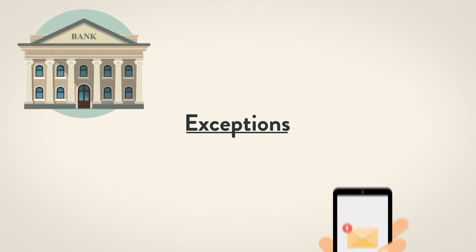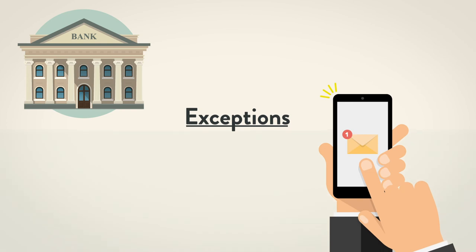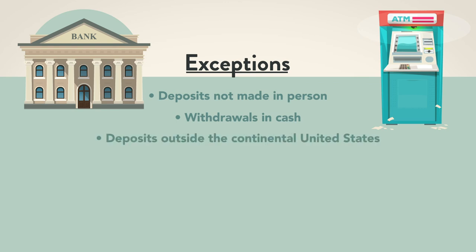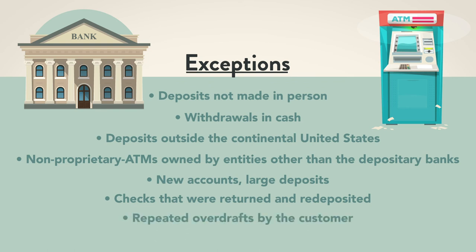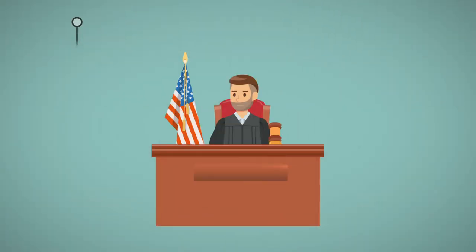Beyond these rules, certain exceptions apply and the depository bank is required to give the depositor notice of the applicable exceptions. These exceptions include deposits not made in person — such as deposits to an ATM — withdrawals in cash, deposits outside the continental United States, and ATMs owned by entities other than the depository bank, called non-proprietary ATMs. Additional exceptions include new accounts, large deposits, checks that were returned and redeposited, repeated overdrafts by the customer, and some emergency conditions.